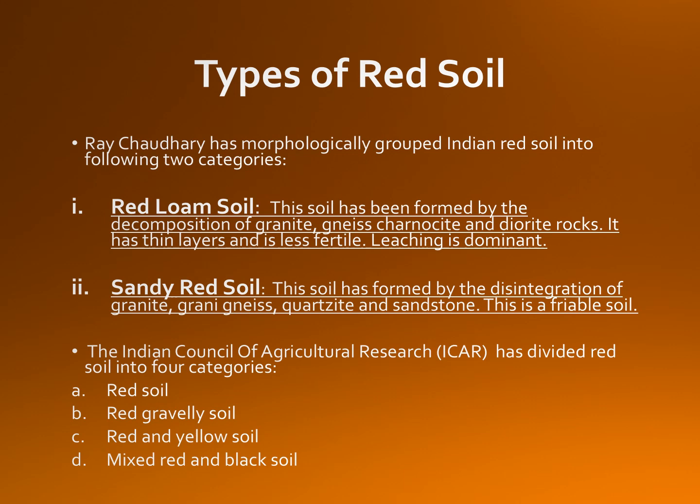The other category is sandy red soil. This soil has formed by the disintegration of granite, quartzite, and sandstone. It is a friable soil. Due to the presence of hematite and limonite, its color ranges from red to yellow. This soil has been rightly leached. It occupies parts of former East Madhya Pradesh, neighboring hills of Orissa, Andhra Pradesh, and Tamil Nadu. The Indian Council of Agricultural Research has divided red soils into four categories: red soil, red gravelly soils, red and yellow soil, and mixed red and black soil.